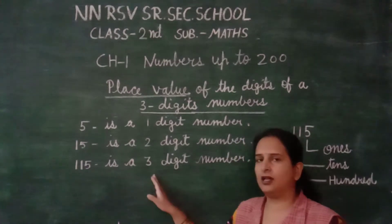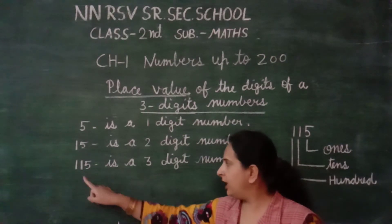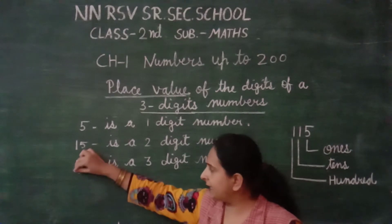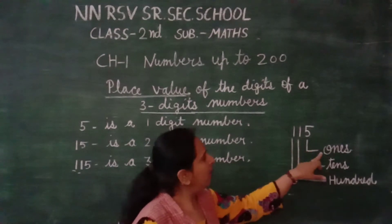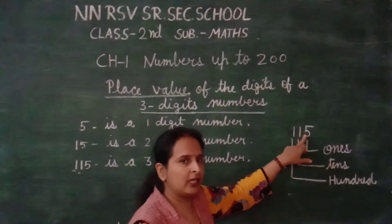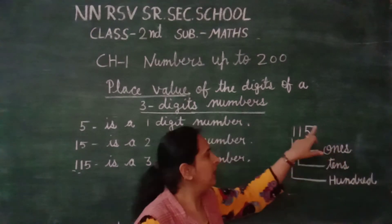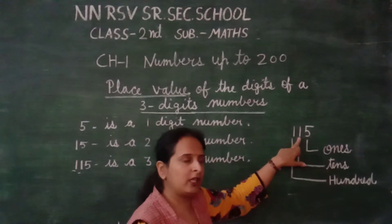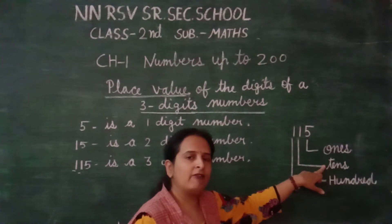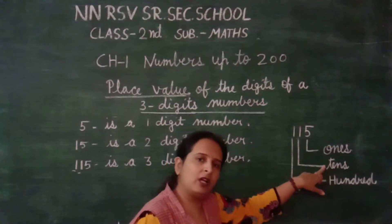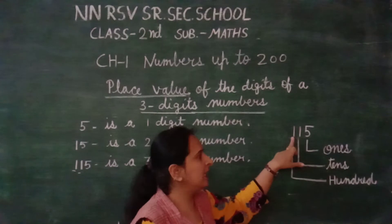115 is a 3-digit number. It means 5 is in the 1's place, 1 is in the 10's place, and the next 1 is in the 100's place. So, the place value of 5 is 5 ones, which equals 5. The place value of the next 1 is 1 ten, which equals 10. And the place value of the last 1 is 100.